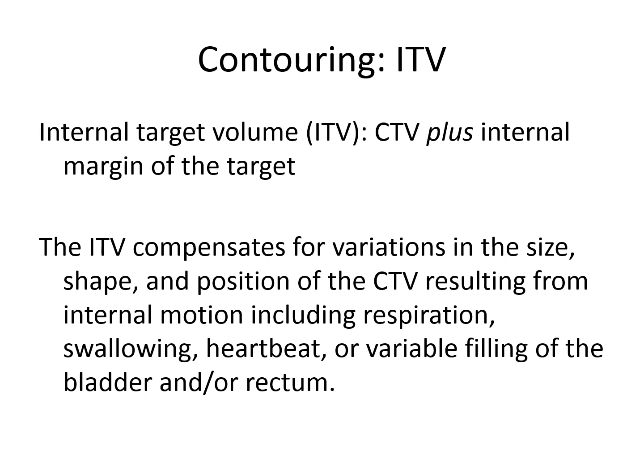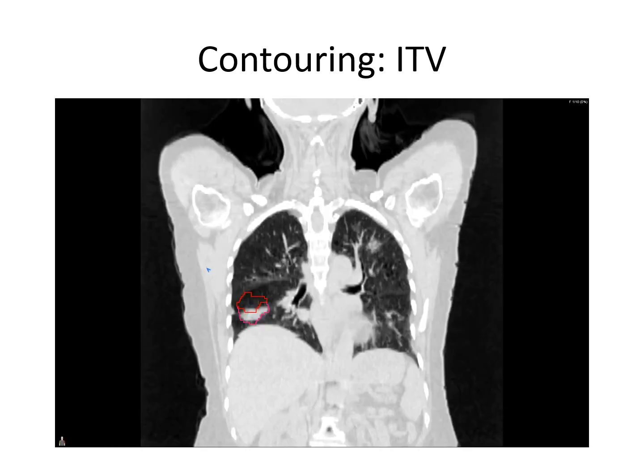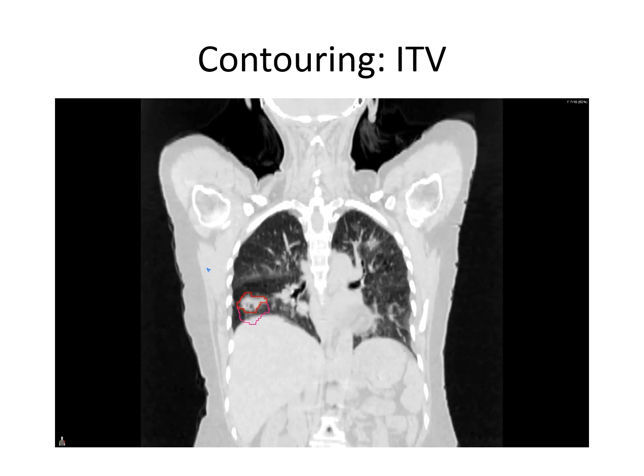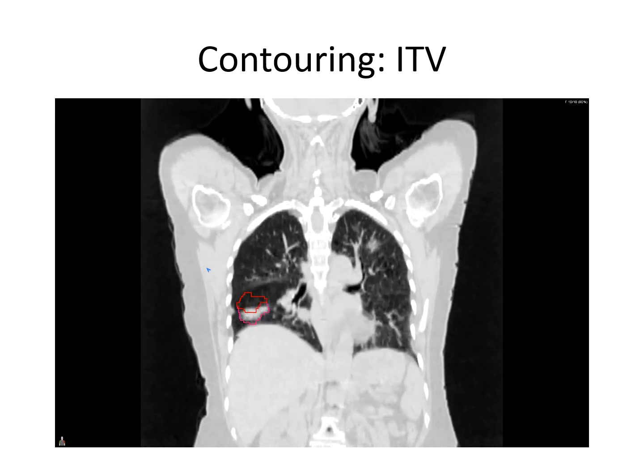That moves us to the ITV, or internal target volume, which is the CTV plus an internal margin of the target. The ITV compensates for variations in the size, shape, and position of the CTV that result from internal motion, including respiration, swallowing, heartbeat, or variable filling of the bladder and/or rectum. Here is a video image of a patient simulated for lung cancer — the pink area represents the gross tumor volume, and playing the movie shows how the gross tumor moves with respiration. The area highlighted in red constitutes the ITV, accounting for internal target motion due to respiration.